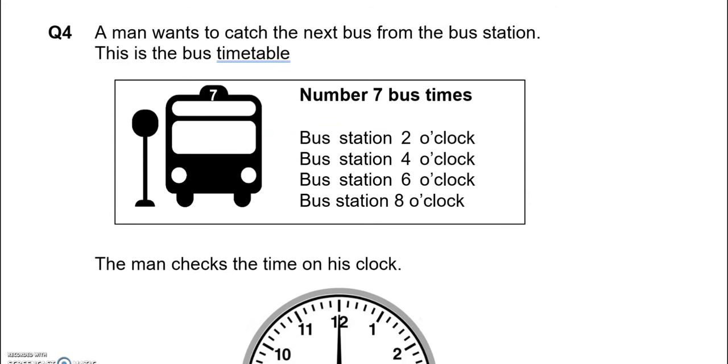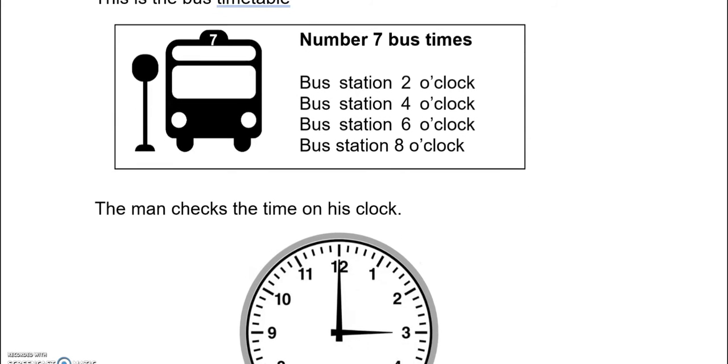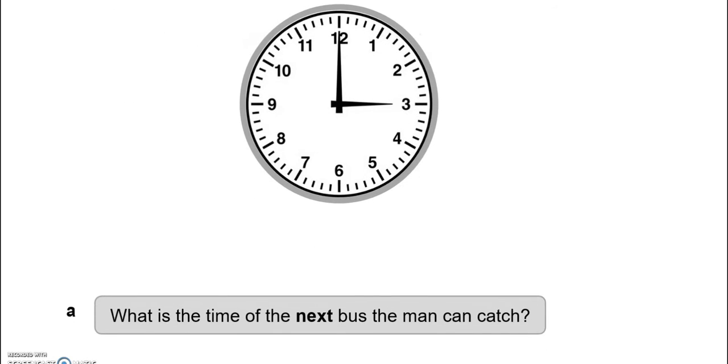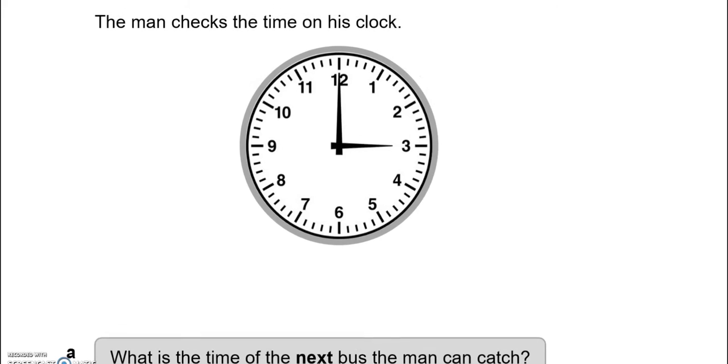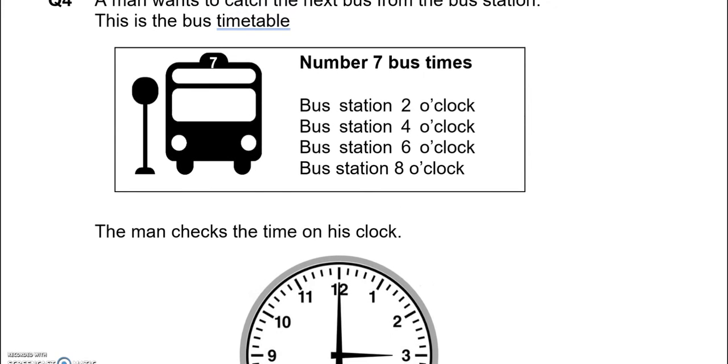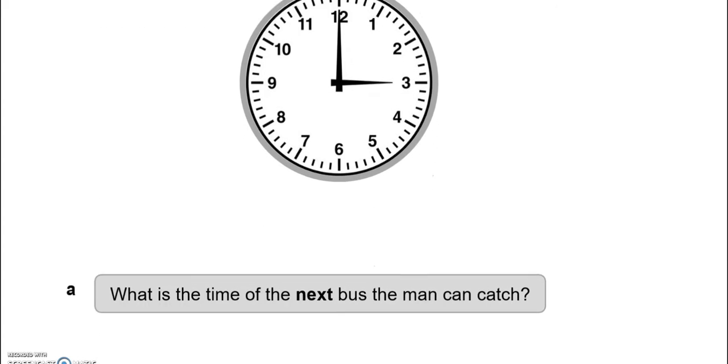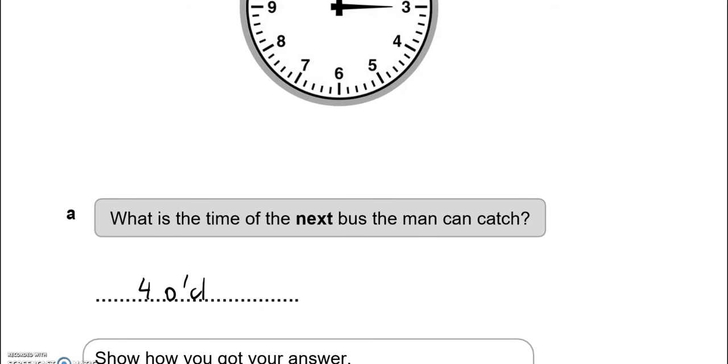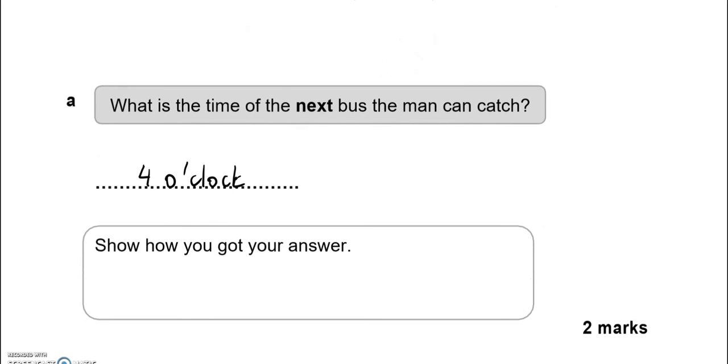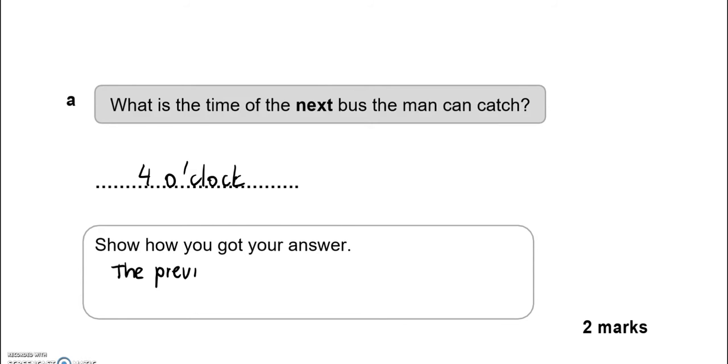A man wants to catch the next bus from the bus station. This is the bus timetable. The man checks the time on his clock. So it's 3 o'clock. What is the time of the next bus the man can catch? So from 3 o'clock the next one would be 4 o'clock.